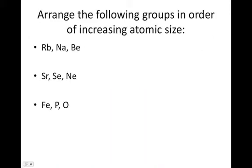So arrange the following groups in order of increasing atomic size. Looking at your periodic table for this first group, we have rubidium, sodium, and beryllium. Beryllium is going to be the smallest because it's on energy level two. Sodium is on energy level three, so it's next. And then rubidium is going to be the biggest because it's down at energy level five. For strontium, selenium, and neon, neon is going to be the smallest, energy level two. Selenium, energy level four, is next smallest. And then strontium will be the biggest. And then for iron, phosphorus, and oxygen, oxygen will be the smallest, then phosphorus, then iron.